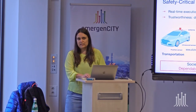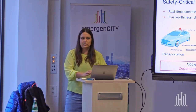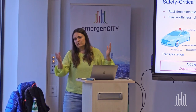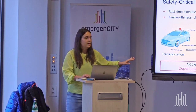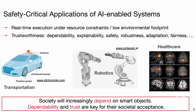We try to go beyond simple image classification. In safety-critical domains, it matters a lot. There are two key problems: first, we need to run inference in real-time under resource constraints on the edge. The other aspect is trustworthiness — dependability, explainability, safety, robustness, adaptation if the situation changes, fairness to counteract biases. The belief is that society will increasingly depend on these smart objects, and dependability and trust are key to their societal acceptance.